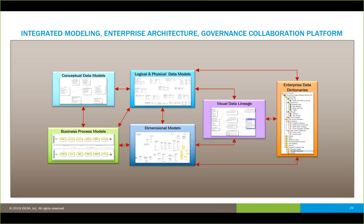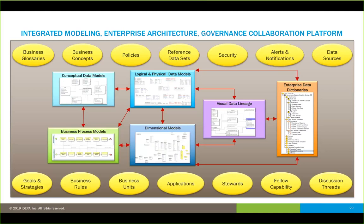Ultimately, at the end of the day, to achieve the maturity, what you really want is integrated modeling, enterprise architecture, and governance as a platform to drive everything. That means the different types of data models integrated to your business process models, including visual data lineage data models and your enterprise data dictionaries as the core — and around that, all the other things you would think of in terms of enterprise architecture governance: business glossaries and concepts, policies, security, goals and strategies, defining your business rules, identification of your business units, your stewards, and a means to collaborate and discuss with your coworkers to implement these types of things.